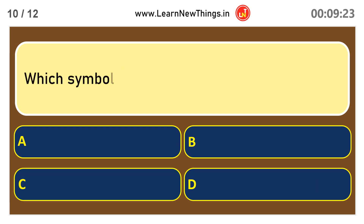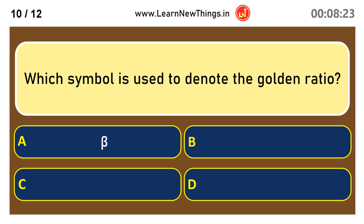Which symbol is used to denote the golden ratio? Phi (φ).